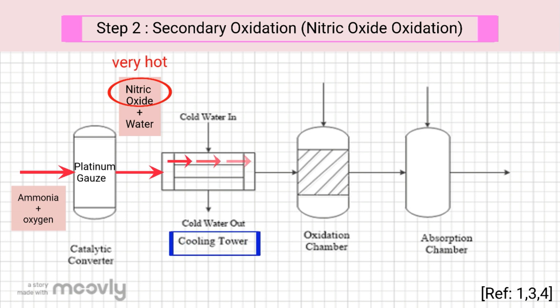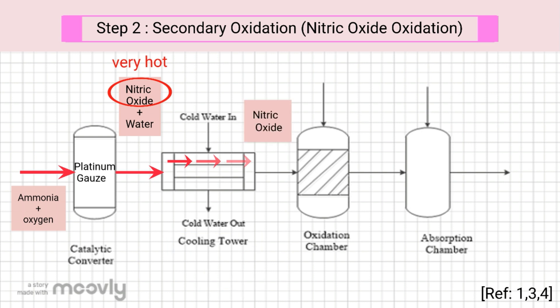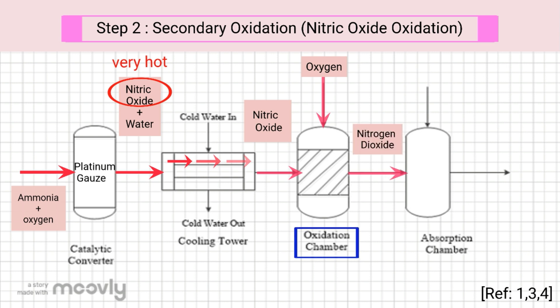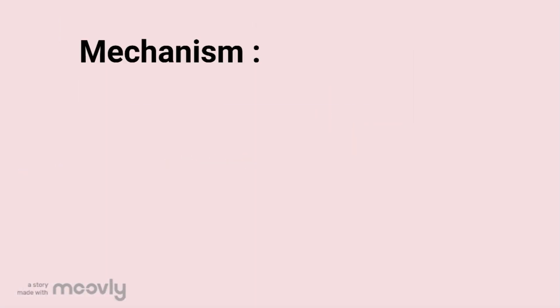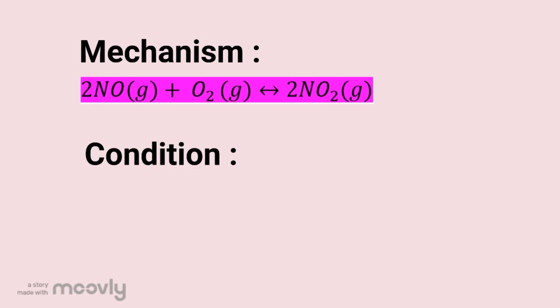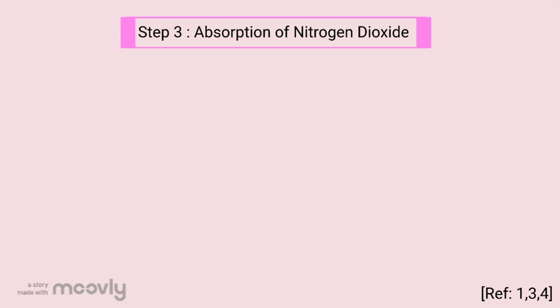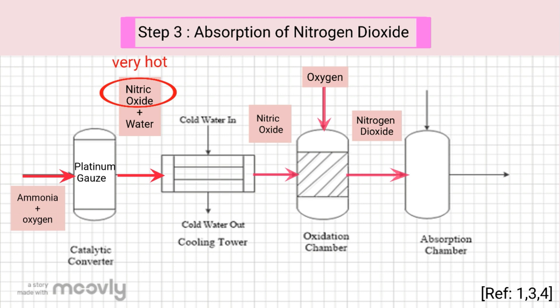Step 2: Nitric oxide oxidation. Nitric oxide from ammonia oxidation is very hot. It is passed through a cooling tower where its temperature is cooled to 150 degrees Celsius. Next, it is transferred to the oxidation chamber and oxidized to nitrogen dioxide at 50 degrees Celsius. The mechanism is as shown. Nitric oxide oxidation is operated at 50 degrees Celsius.